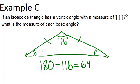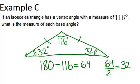That means the two base angles together add up to 64 degrees. Because they are congruent, we can just do 64 divided by 2 and get 32 degrees. That means that each of the base angles have to be 32 degrees, which satisfies the fact that they have to be congruent and that the three angles in the triangle have to add up to 180 degrees. So the measure of each base angle is 32 degrees.